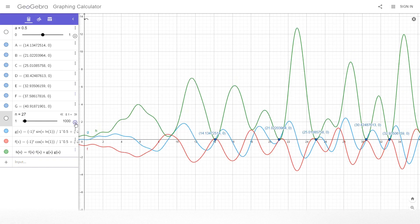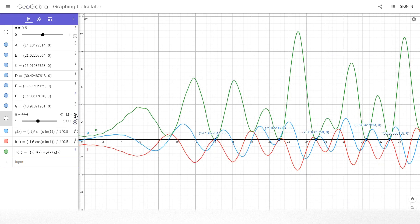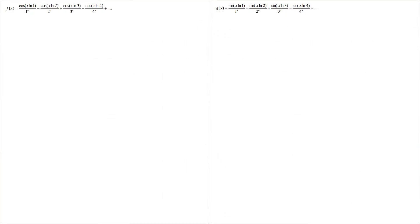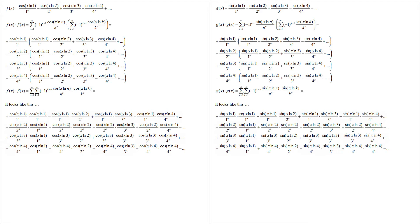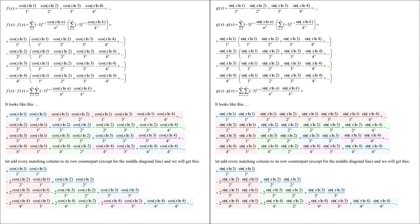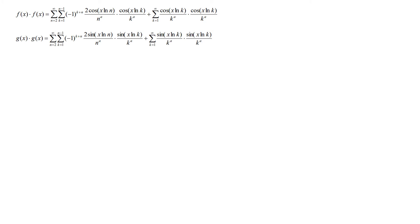Let's first test h of x with the first 1000 steps so that you will have a visual confirmation of the idea. Now let's extract the real formula for the non-trivial zeros from this new h function. We will start by splitting the screen into two sections, because the procedure is identical in both cases. We want to know what f of x squared and g of x squared equal. Now let's open the brackets and emphasize with colors all the matching objects. Let's add every matching column to its row counterpart, except for the middle diagonal line, and we get the formulas for f of x squared and g of x squared.